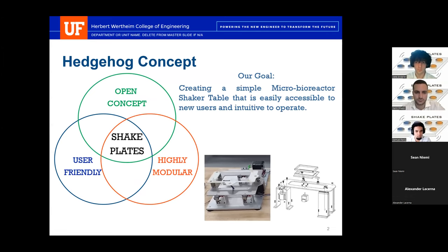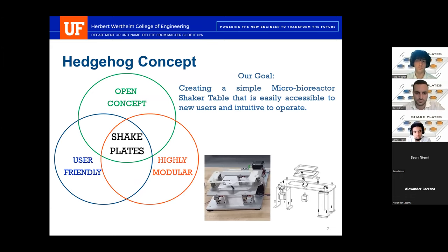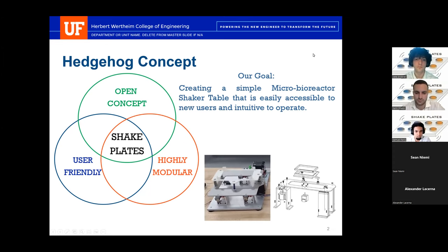Our hedgehog concept was our core value proposition. We were trying to find the intersection of our most desired qualities going through the design process, and that ultimately defined our whole design philosophy. We wanted the intersection of open concept design with an open view of the well plate and test tubes, easy integration of ODFI systems and other sensors to monitor pH and dissolved oxygen, user-friendliness so it's easy to learn and operate without much technical experience, and high modularity so it's easy to assemble, service, and integrate with other systems. Our ultimate design goal was creating a simple micro bioreactor shaker table that's easily accessible to new users and intuitive to operate.